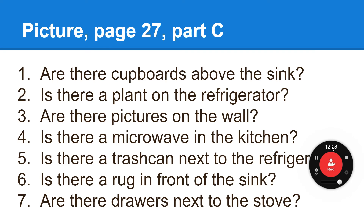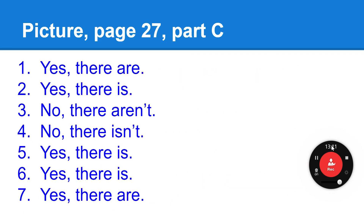Part C — look at the picture and write the answer. Are there cupboards above the sink? Yes, there are. Is there a plant on the refrigerator? Yes, there is. Are there pictures on the wall? No, there aren't. Is there a microwave in the kitchen? No, there isn't. Is there a trash can next to the refrigerator? Yes, there is. Is there a rug in front of the sink? Yes, there is. Are there drawers next to the stove? Yes, there are.